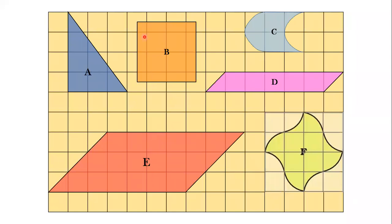Now we will consider shape B. How many completed squares does it cover? It covers 4 squares completely. Now you see the top part — two half squares you can see here. There are 8 half squares in total. 8 half squares means 4 full squares.